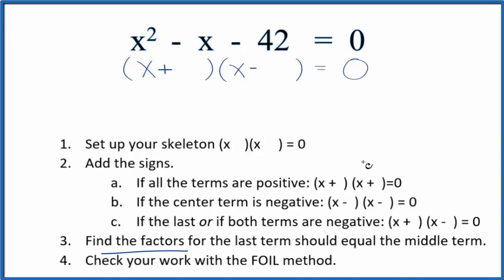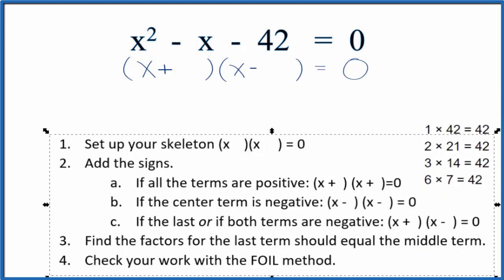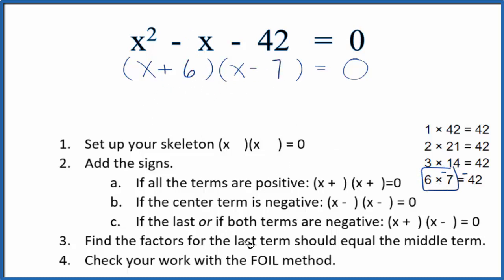For 42, there are four different factors to consider, but when we look at these it's pretty apparent that 7 and 6 work. Seven times six gives us 42, and if the seven were negative, that would give us -42. When we add these together, -7 and 6 gives us -1. So we're going to put -7 and then 6 here, and we can check this using the FOIL method.